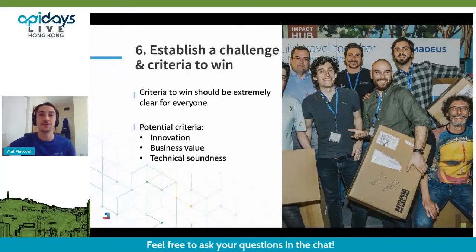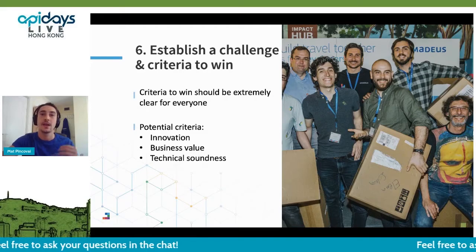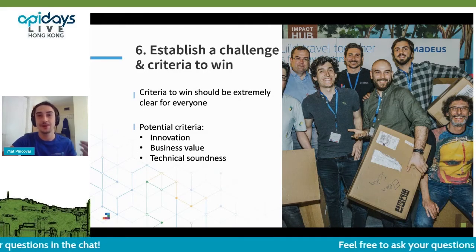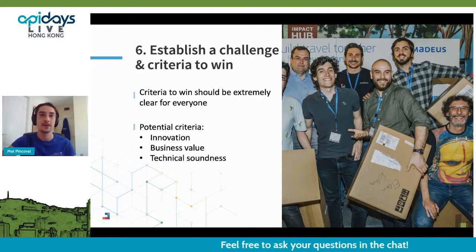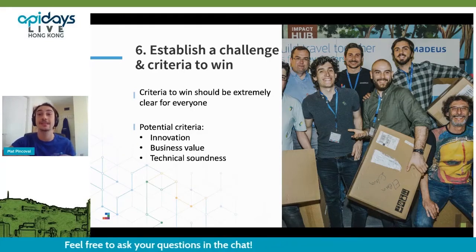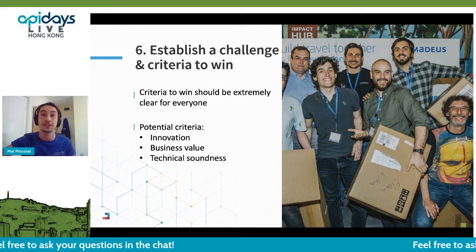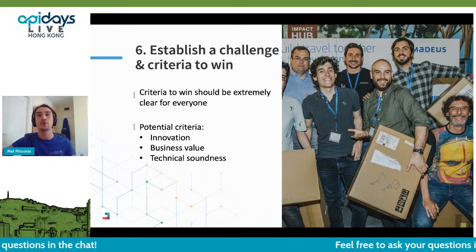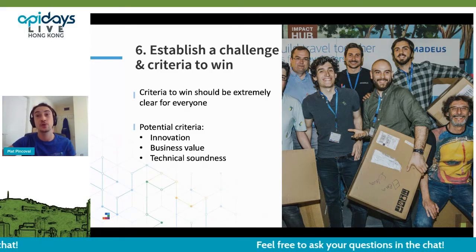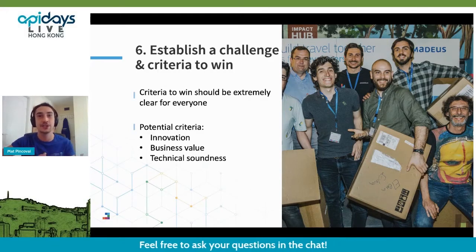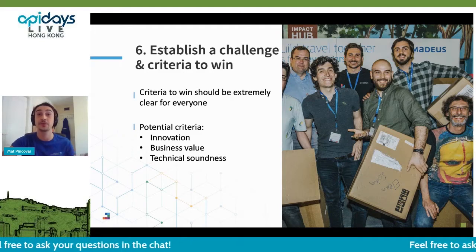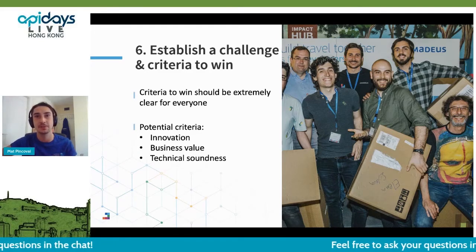It's also very important to establish a challenge with clear criteria to win. This will be driven mainly by your overall objectives. For example, before we launched our open API program, we organized a hackathon to test our API with external developers for the first time, and we created a secondary challenge called the bug hunter, where we encouraged developers to find issues with the APIs and report them to us. This worked very well — instead of getting frustrated at bugs, participants would cheer each time they found one.